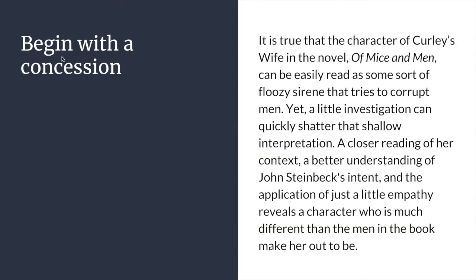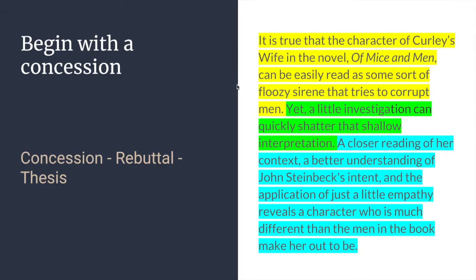For this one, I begin with a concession. A concession means that I'm giving something up. I know that when somebody reads Of Mice and Men, one of the common misunderstandings they have is with Curly's wife. After you're done reading it, come back and we'll talk about how we can divide it up. Hopefully you divided it like this — we begin with a concession that it's true the character of Curly's wife in the novel Of Mice and Men can be easily read as some sort of floozy siren that tries to corrupt men. We're giving in, saying yes, on a first reading it's natural to think that about her. And then I give a rebuttal.